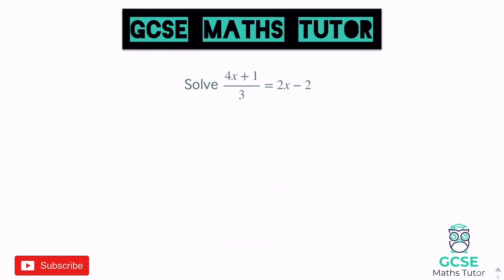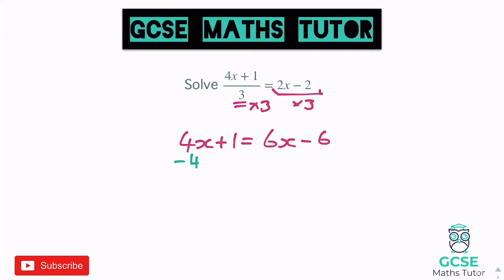This one looks a little bit trickier, but we're going to take exactly the same approach. First things first, we're going to have to get rid of this divide by 3, so times both sides by 3, and that's going to give us a single line equation. The top doesn't change — we're just reversing that divide by 3 — so 4x plus 1 equals, and then we're multiplying both terms on the right by 3, so we get 6x minus 6. Then get rid of the smallest value of x, which is the 4x, so minus 4x, and that leaves us with 1 equals 2x minus 6.